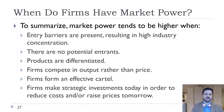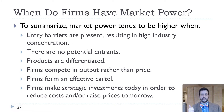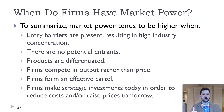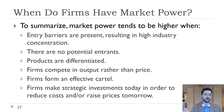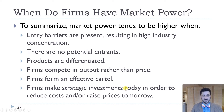To summarize: when entry barriers are present and there is high concentration, that will increase market power. If there are no potential entrants, products are differentiated, firms compete in output rather than price, they can form an effective cartel, or they make strategic investments today to reduce costs and/or raise prices tomorrow — as discussed at the end of Chapter 11 — these all increase market power.